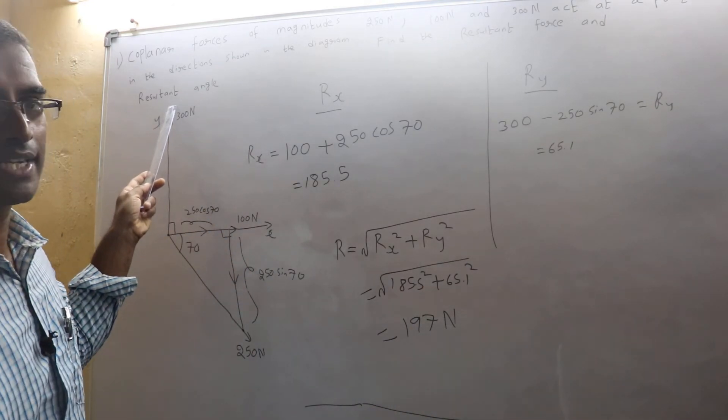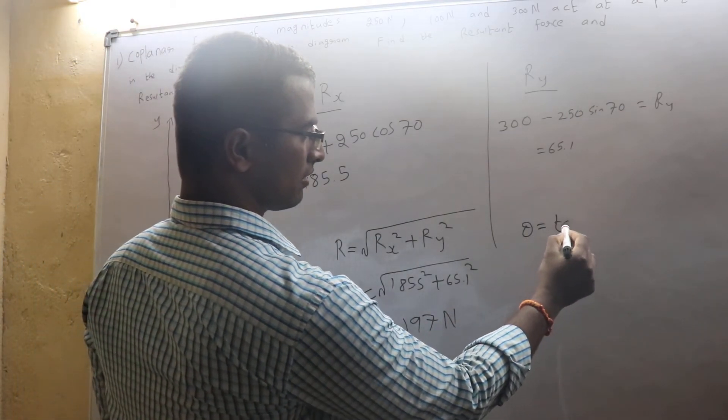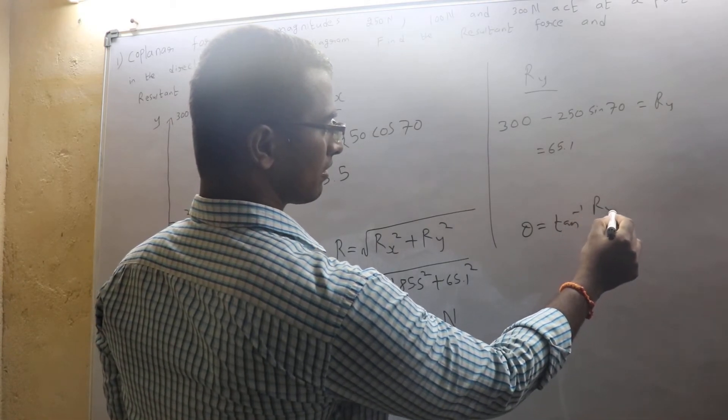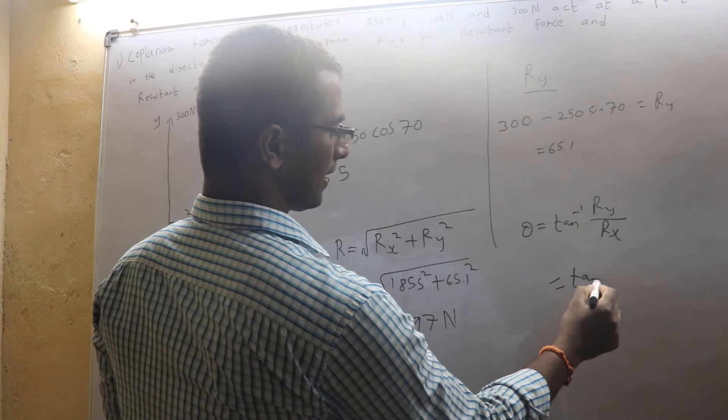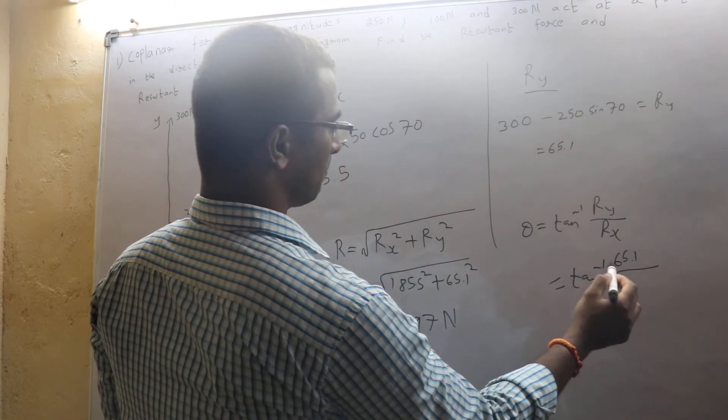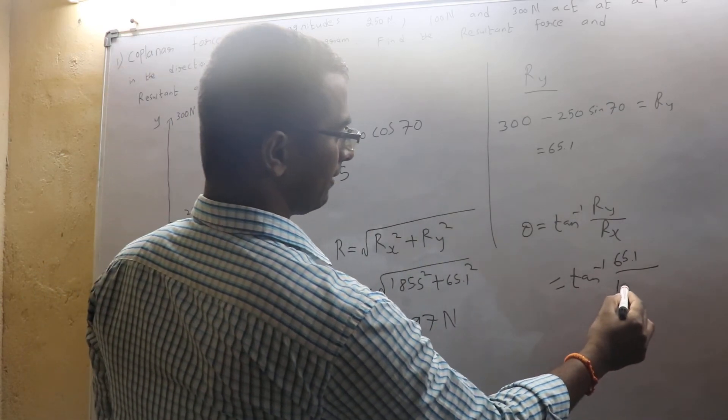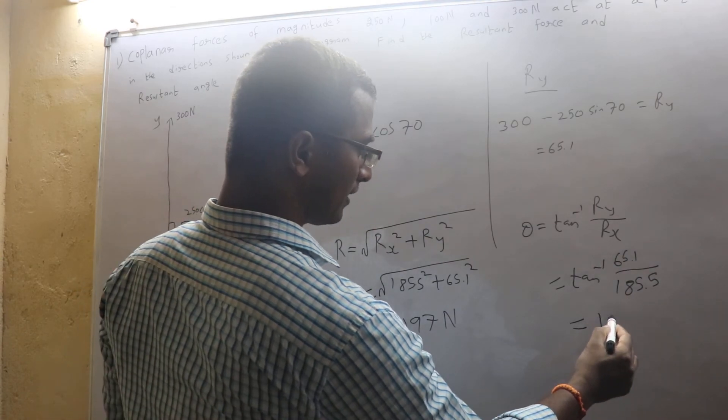They are also asking you the resultant angle. So resultant angle formula is tan inverse Ry by Rx. So here Ry, how much did I get? 65.1 by Rx, which is 185.5. So which will give you 19.3 degrees.